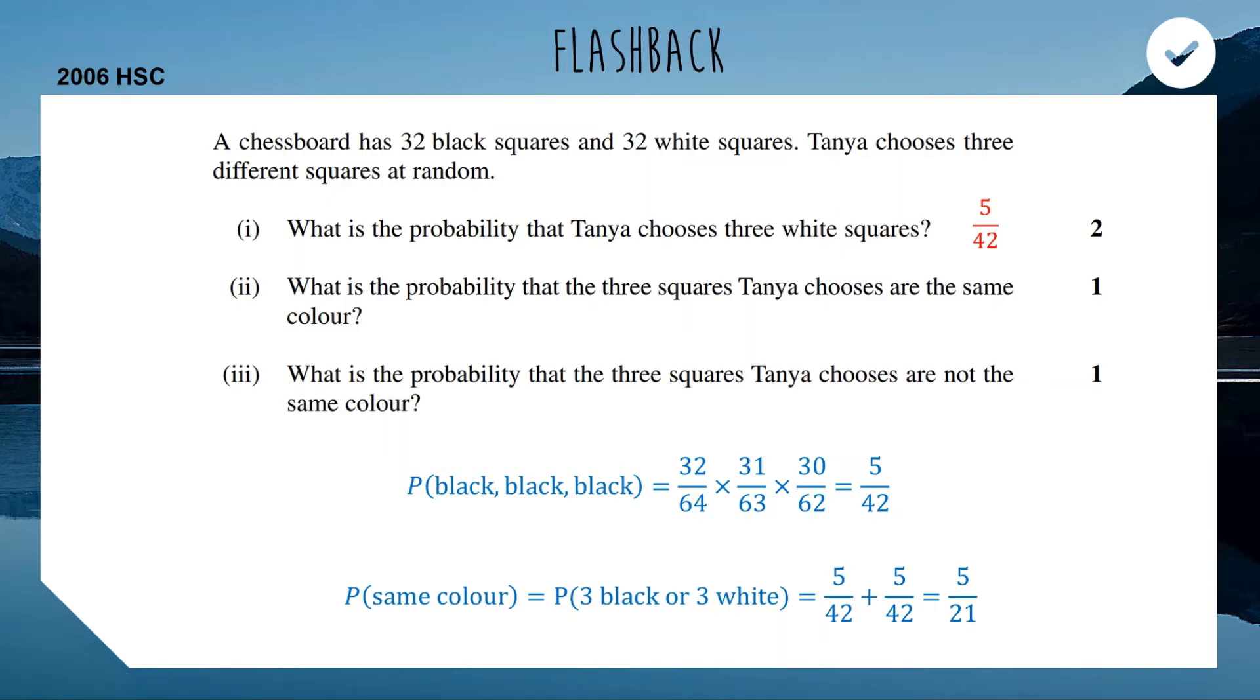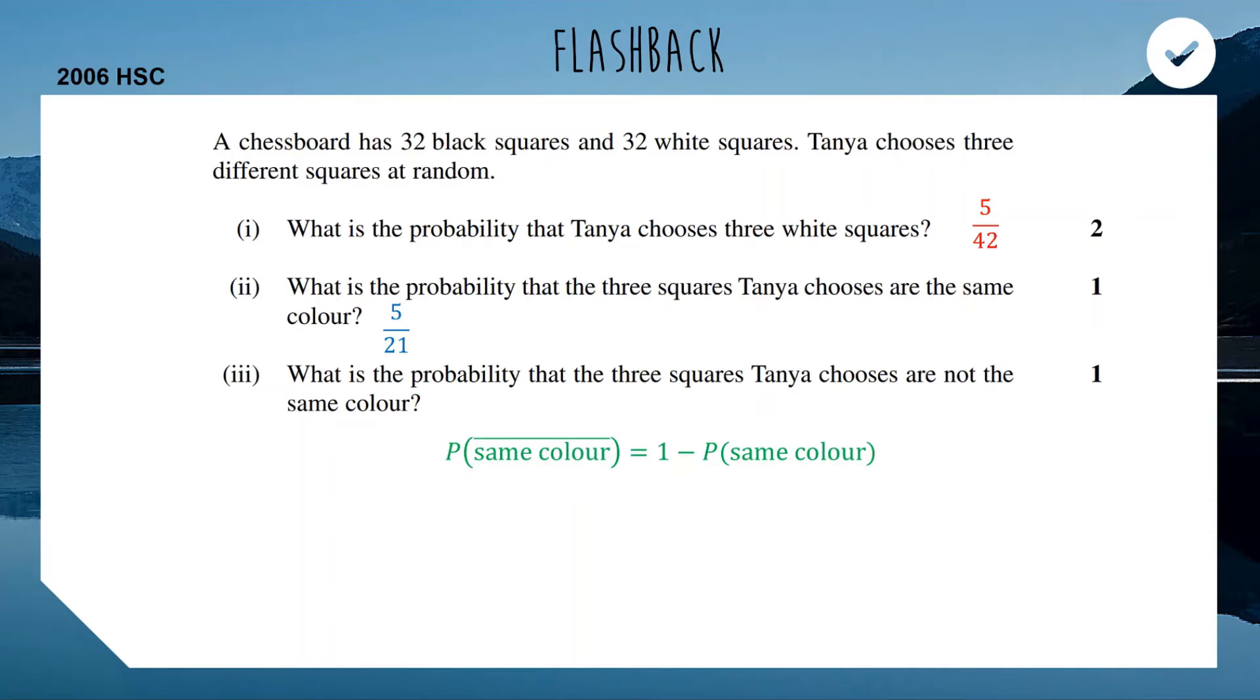And now for part three, what is the probability that the three squares Tanya chooses are not the same color? We just found that the probability that the three squares are the same color is 5 out of 21. Now, this is only one mark. So see if you can think of a short way of answering this question. Think about this. There's a 5 in 21 chance you get three of the same color. So what's the chances that you don't do that? We're kind of talking about complements here. We're talking about things not happening. So if an event has a probability of 5 out of 21 of happening, that means the leftover that makes up the 21 has got to be the probability that it doesn't happen. So we can use our notation here for the complement. This is probability of not being the same color. That's just going to be one takeaway, the probability of the same color, which we just found. So that's why it's one mark. We can get our answer in a nice, quick and easy way. And as we spoke about in class, this idea of finding an event and then finding the event not happening is a really common assessment question in HSC.